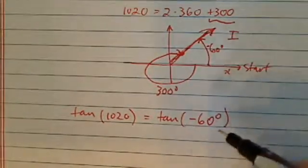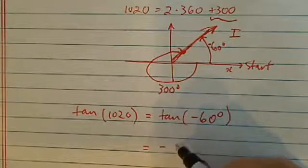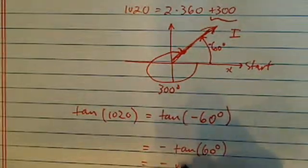I have to go counterclockwise. Tangent of negative 60 is negative tangent of 60, and in other words, negative radical 3.